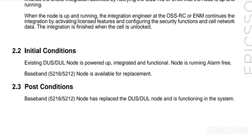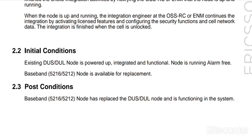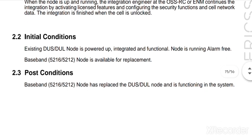Initial conditions: the existing DOS/DOL node is powered up, integrated, and functioning. The node is running alarm-free. The baseband 5212 and 5216 node is available for replacement. Post conditions: the baseband 5212 and 5216 node has replaced the DOL node and its function in the system.